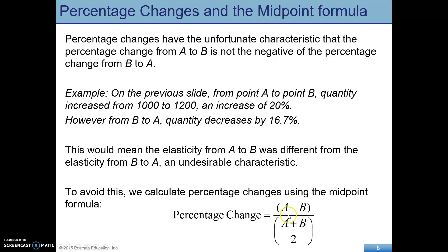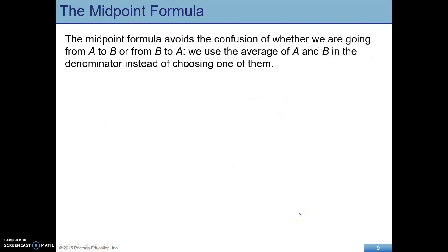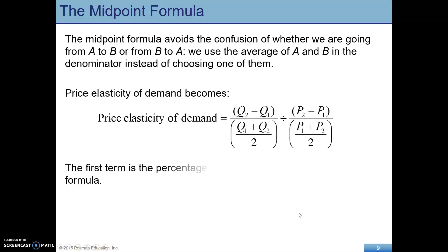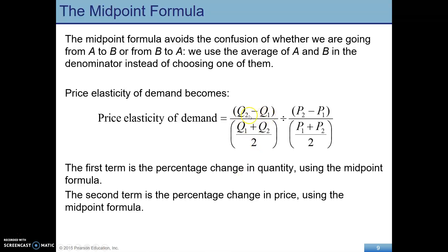On the top we have new minus old for quantity demanded over the average quantity, and on the bottom, new minus old for price over the average price. So this is calculating elasticity using the midpoint formula. You want to be comfortable with both ways of calculating elasticity — just the regular way using percentage changes, and also using the midpoint formula.